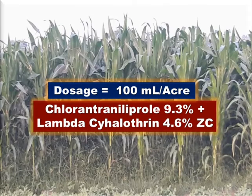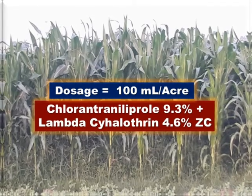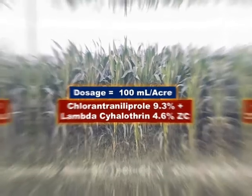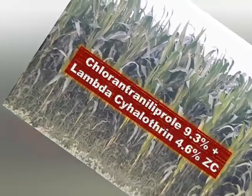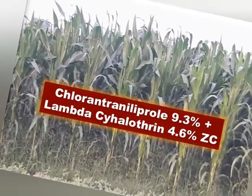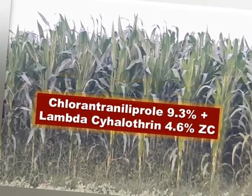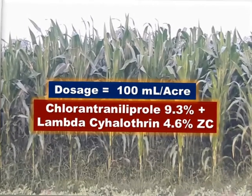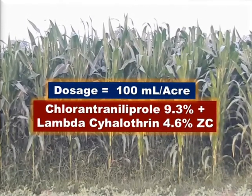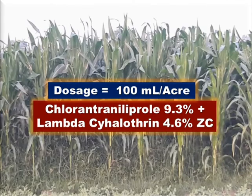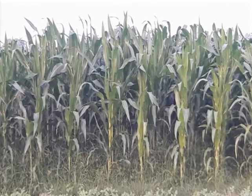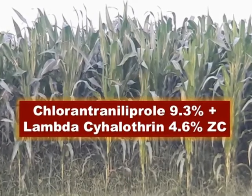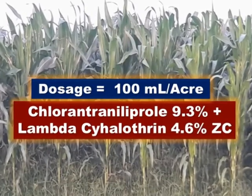To control fall armyworm infestation in maize crop, one combination insecticide has been registered in India: chlorantraniliprole 9.3% plus lambda-cyhalothrin 4.6% ZC formulation. ZC means zeon concentrate. The dosage for this combination insecticide against fall armyworm in maize crop is 100 milliliters per acre.